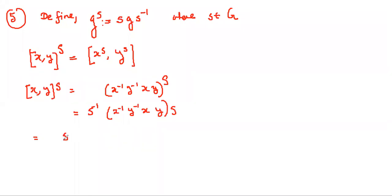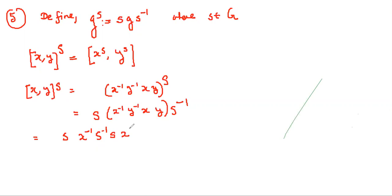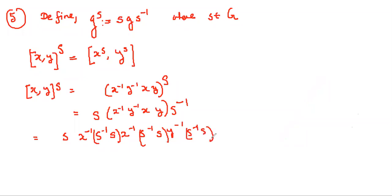What we can do is insert S inverse S between every factor — between X inverse and Y inverse, and between X and Y — since SS inverse equals E. By regrouping, we get S inverse X inverse S, S inverse Y inverse S, S inverse X S, S inverse Y S. These regroup as SX inverse S inverse whole inverse, SY inverse S inverse, and so on.